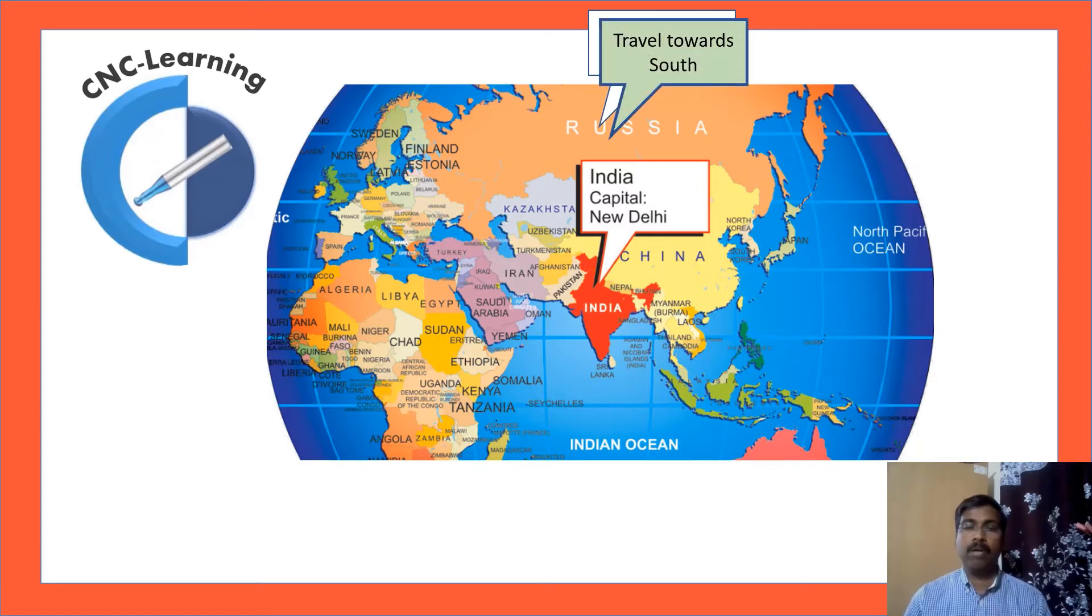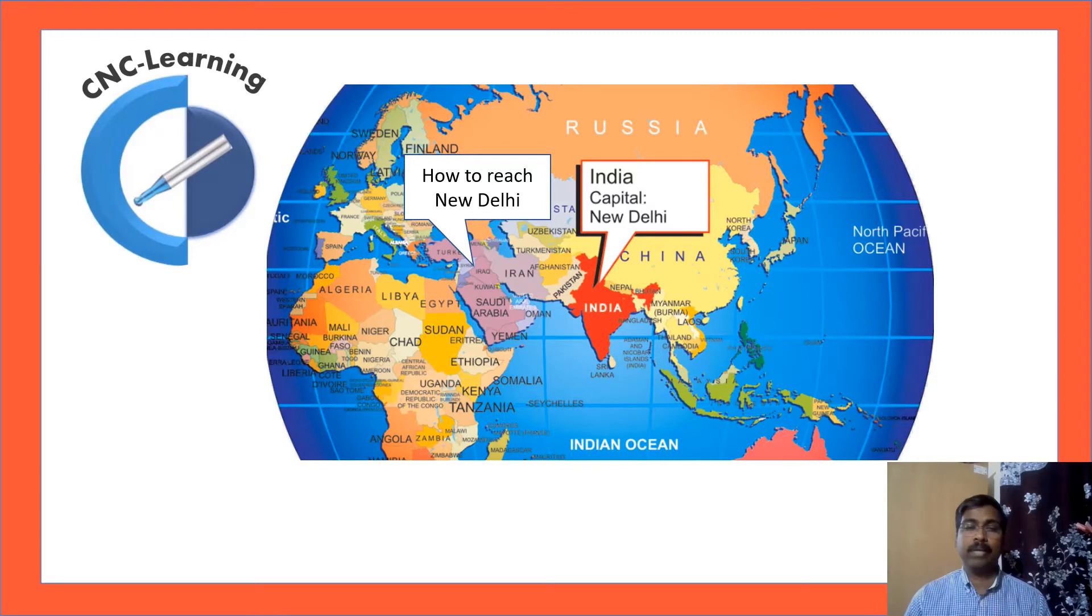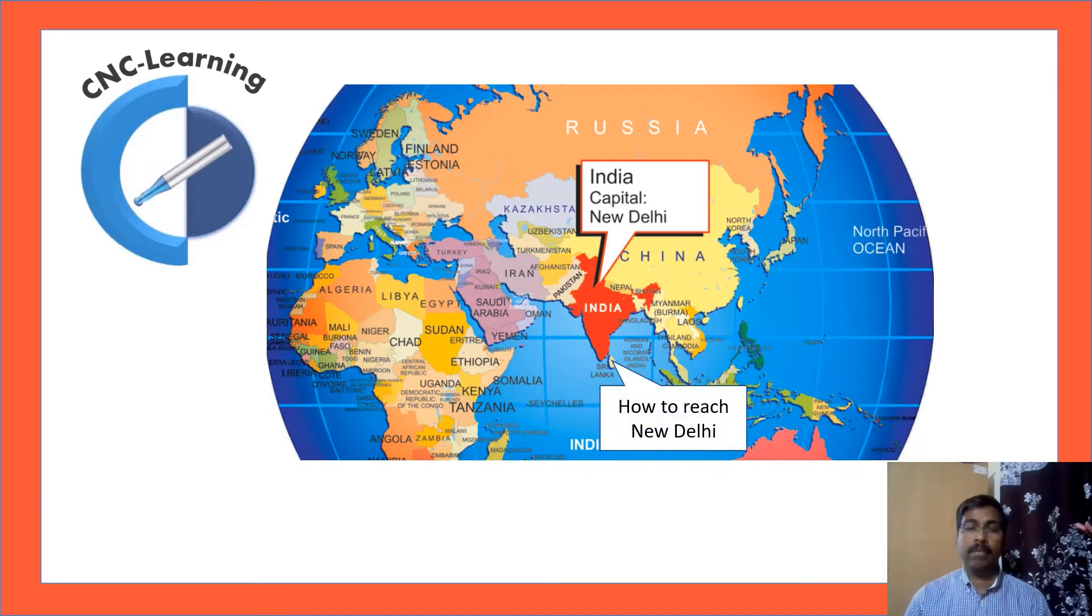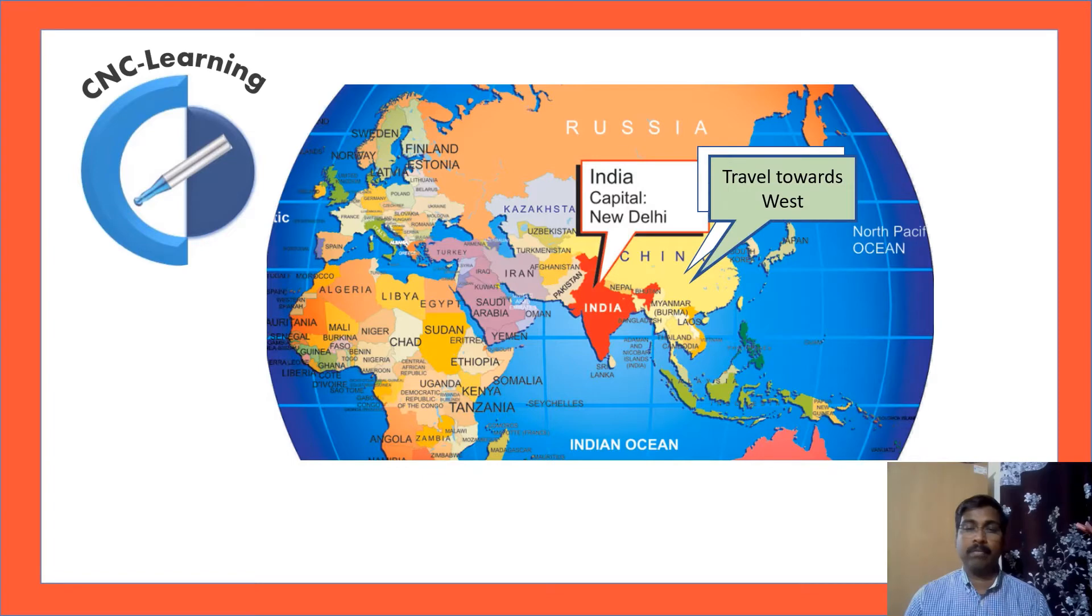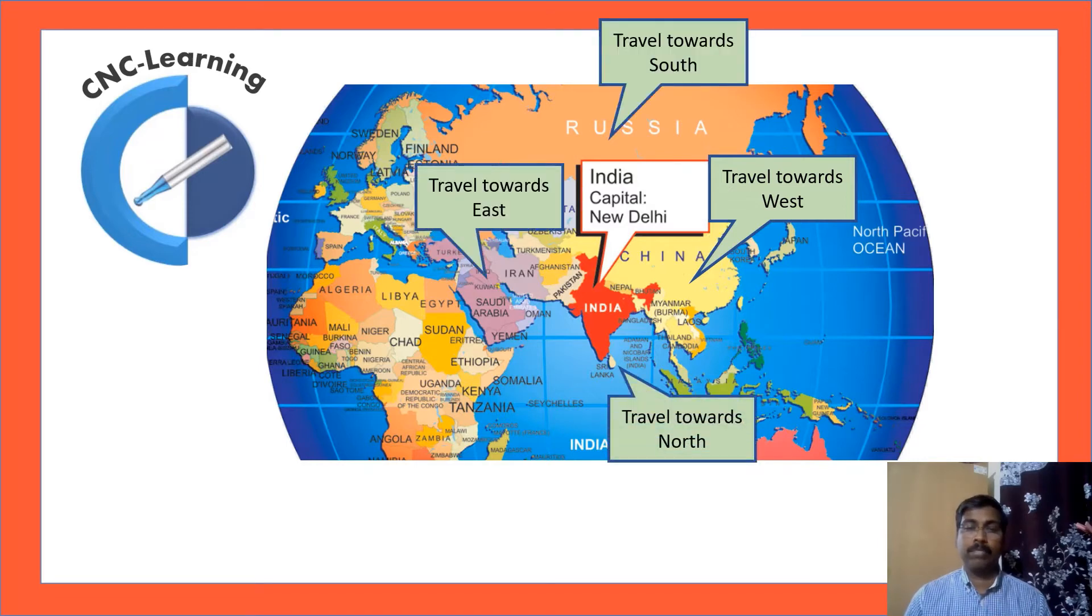Somebody in Russia is asking the way to New Delhi. The answer is travel towards south. Now, the same question is asked by somebody in Saudi Arabia. The answer is travel towards east. Now, when the same question is asked in Sri Lanka, the answer is travel towards north. Now, when it is asked by somebody in China, the answer is travel towards west. So, for the same question, there are different answers because the answers are depending on the location in which it is asked.